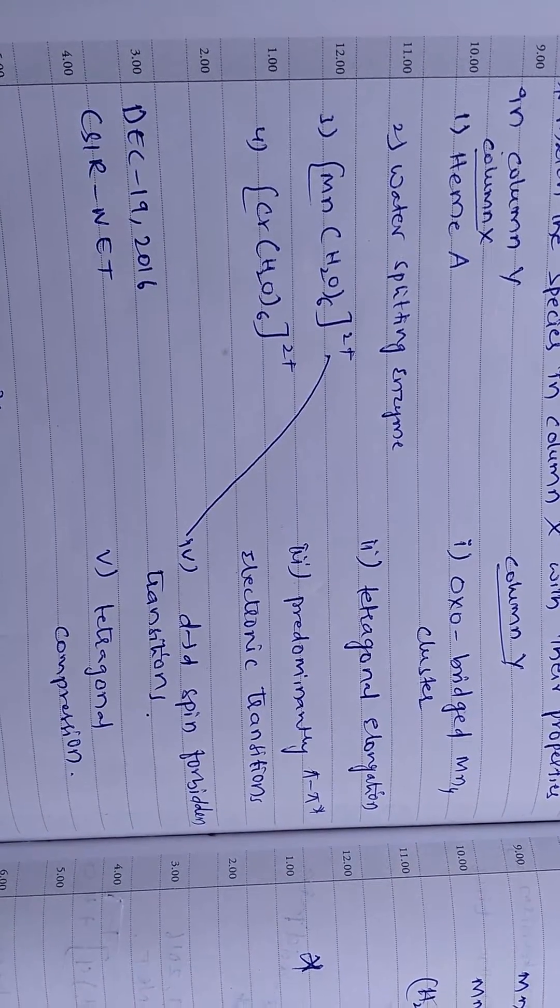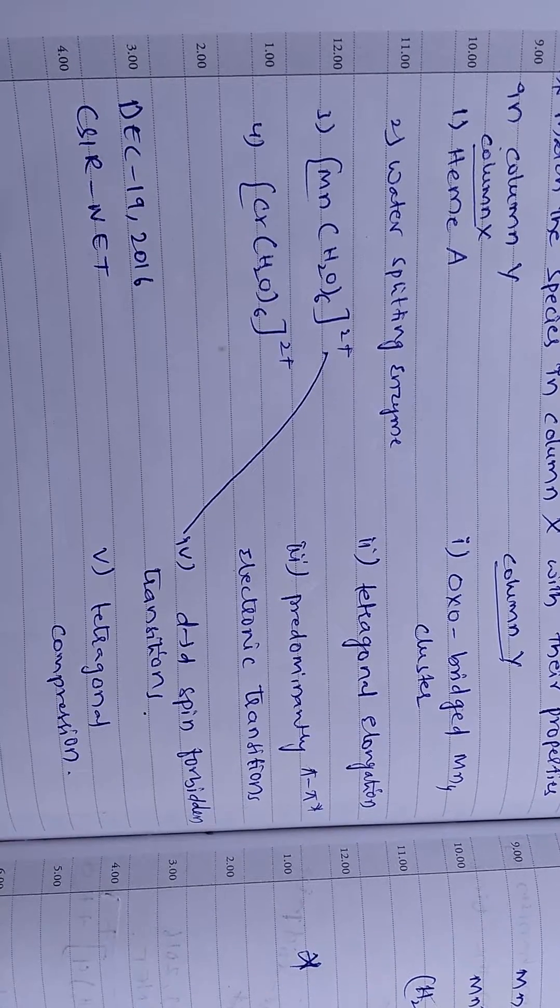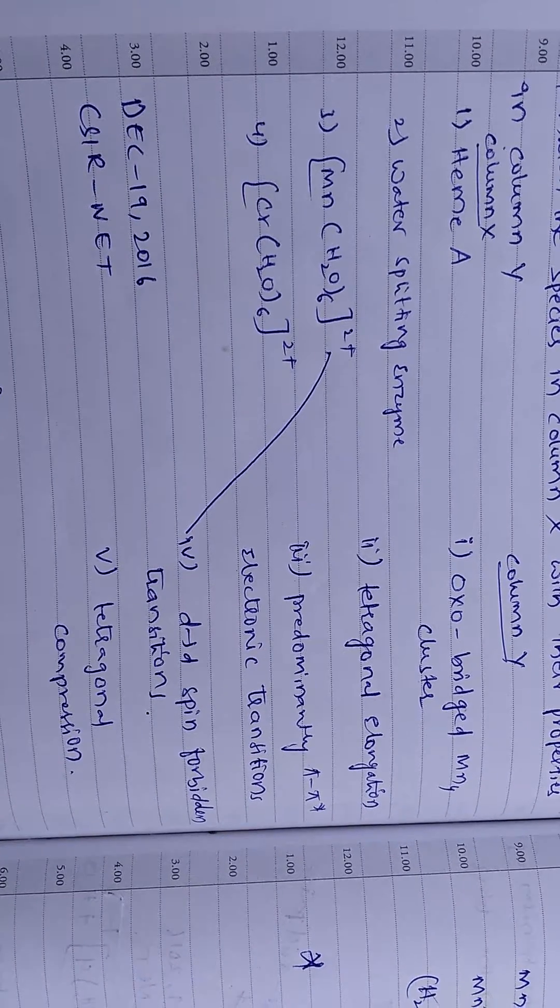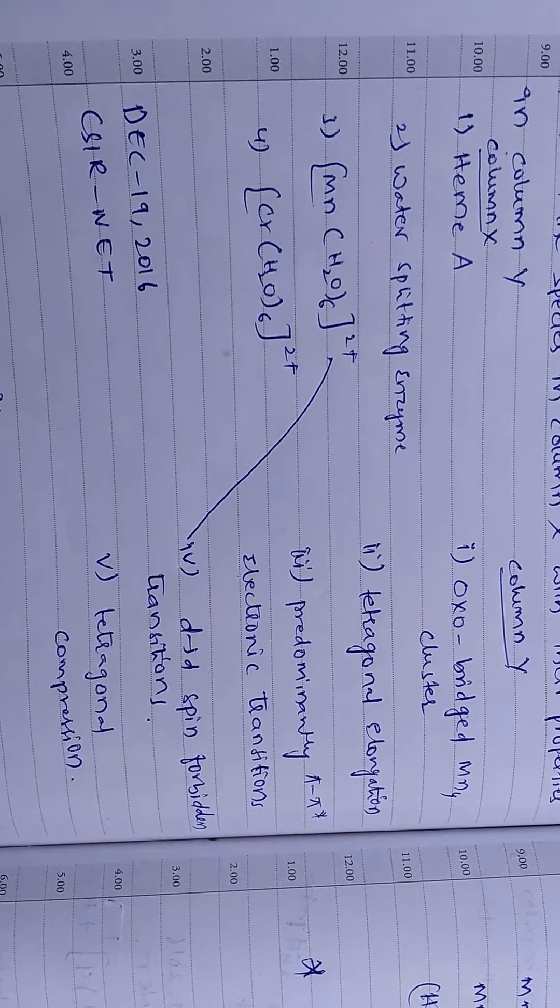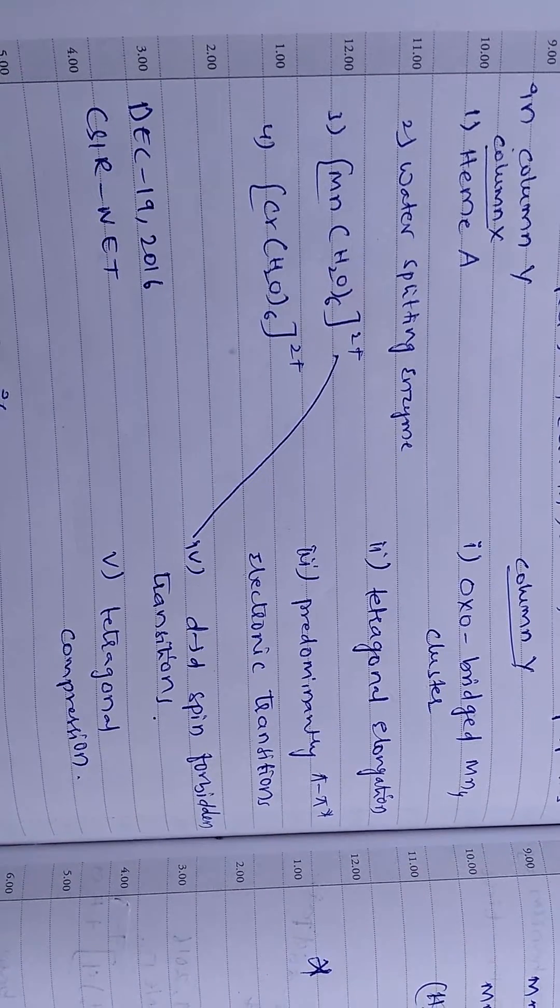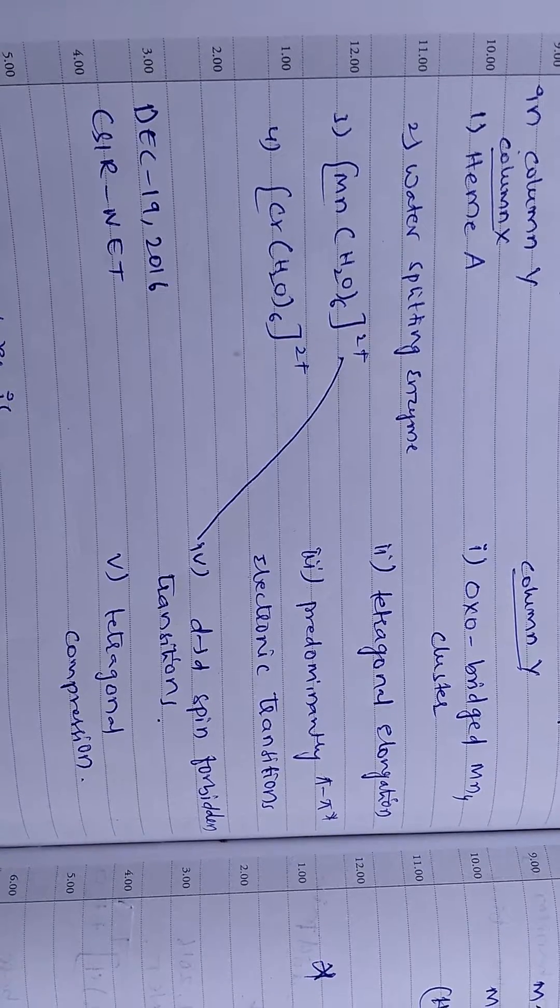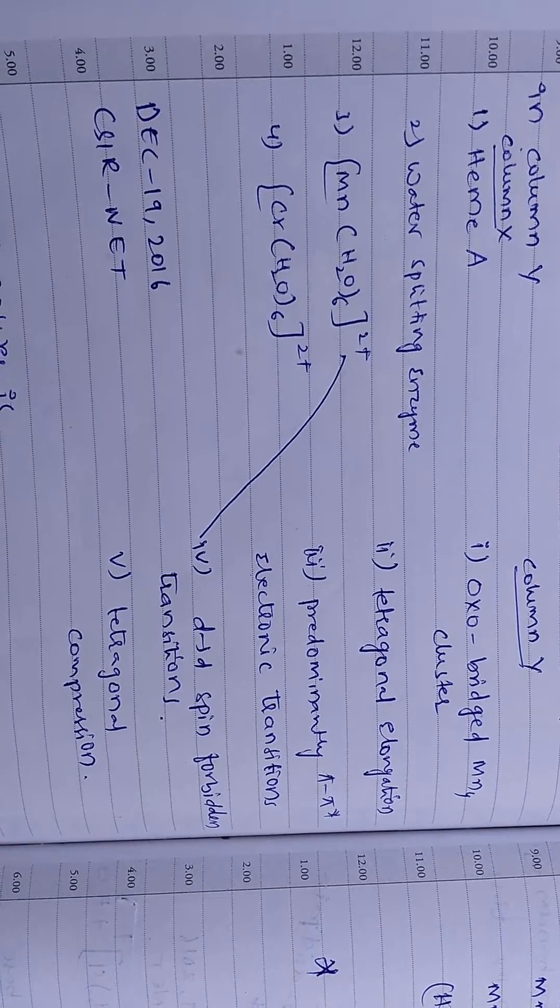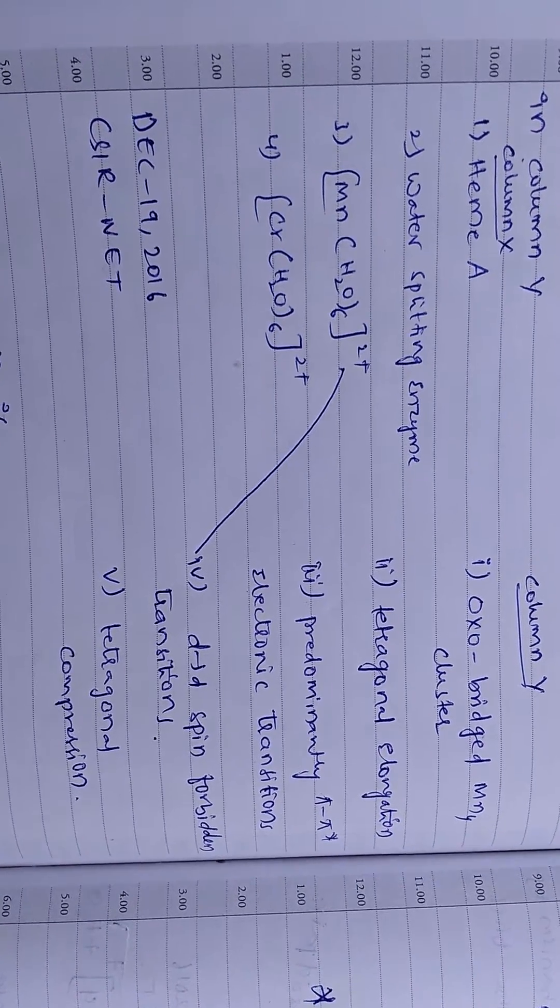Column Y: 1. Oxo-Bridged MN4 Cluster, 2. Tetragonal Elongation, 3. Predominately d-d Star Electronic Transition, 4. d-d Spin Forbidden Transitions, 5. Tetragonal Compression.